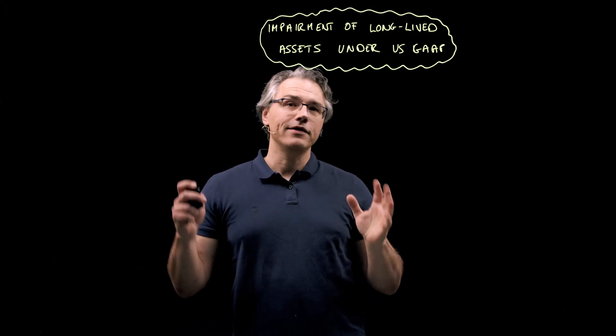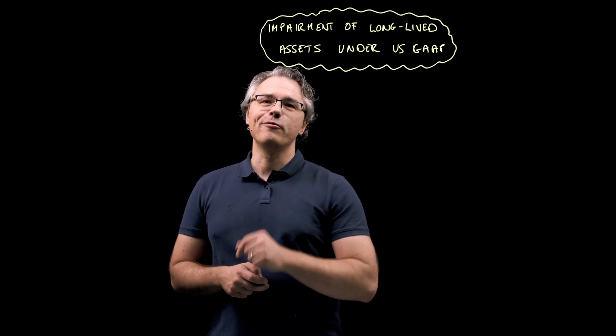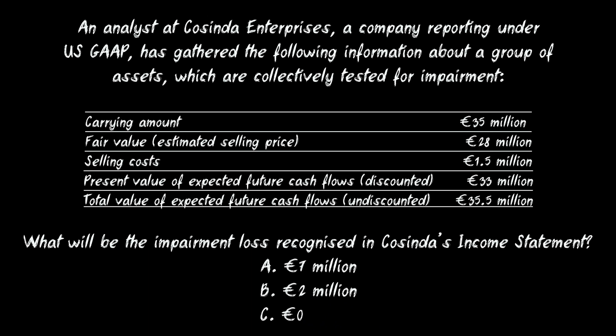So, if this is something you want to get right in the exam, do keep watching and let's get solving. This is the question I want you to have a go at. An analyst at Cosinda Enterprises, a company reporting under US GAAP, has gathered the following information about a group of assets which are collectively tested for impairment.